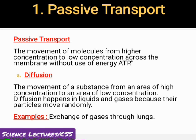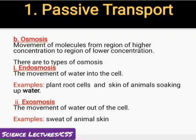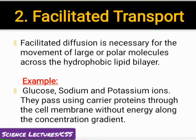Diffusion اور osmosis passive transport کی examples ہیں۔ Diffusion کا process liquid اور gases میں ہوتا ہے کیونکہ ان کے molecules randomly move کرتے ہیں — example: gaseous exchange in lungs۔ Osmosis میں water molecules high concentration سے low concentration کی طرف move کریں گے۔ Osmosis کی further two types ہیں: endosmosis اور exosmosis۔ Endosmosis میں water inside the cell move کرتا ہے — example: absorption of water through root cells اور some animal skins جو water کو soak کرتی ہیں۔ Exosmosis میں movement of water outside the cell ہوتی ہے — example: sweating cells۔